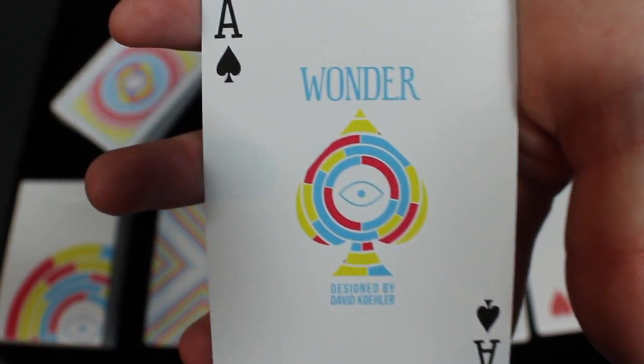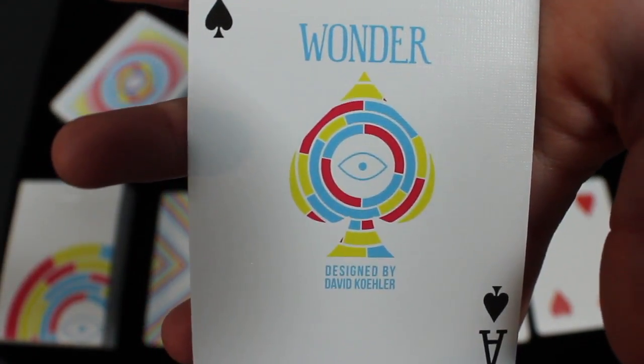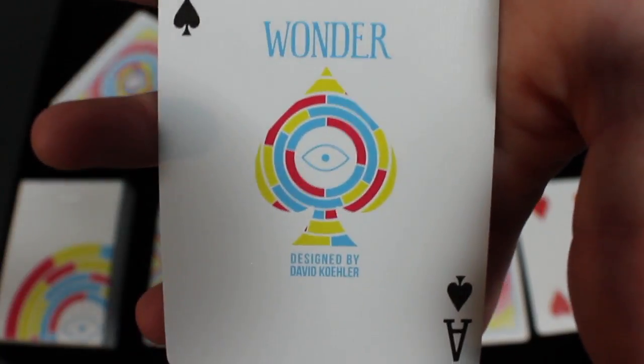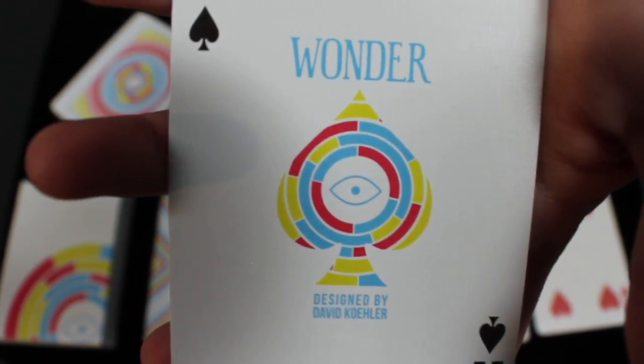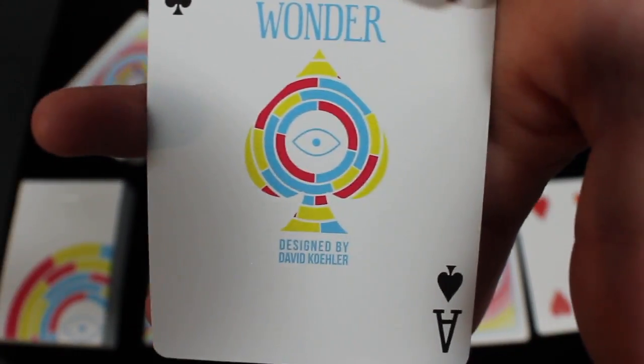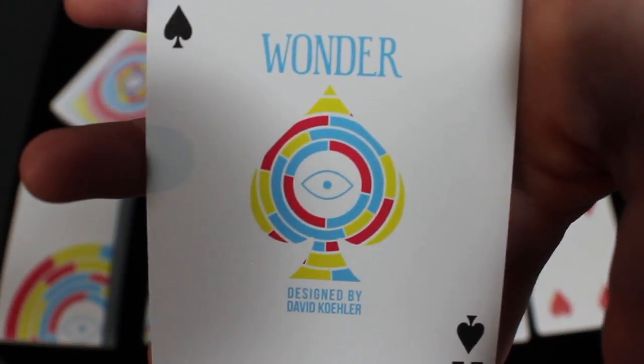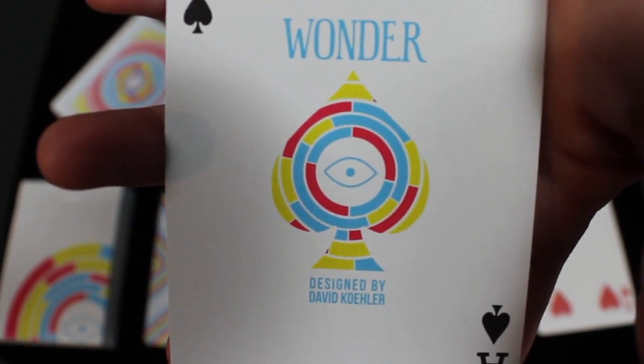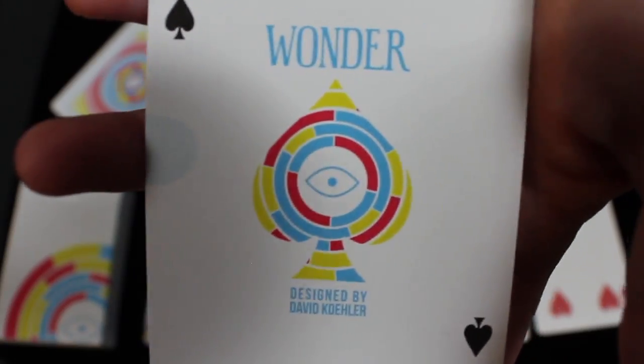Next we're going to take a look at the ace of spades. It has standard pips and indices and the custom ace itself, the symbol in the middle repeats the colorful circular mosaic from the back design. It says Wonder at the top, designed by David Kohler at the bottom, with that nice color and intricate mosaic that you see with the tuck box and the back design. It's a very consistent theme and I think it's done really well.